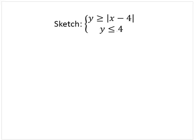Sketch the system of inequalities: y is greater than or equal to the absolute value of x minus 4, and y is less than or equal to 4.